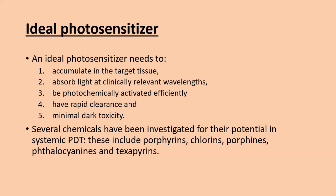What is an ideal photosensitizer? The ideal photosensitizer needs to: (1) accumulate in the target tissue, (2) absorb light at clinically relevant wavelengths, (3) be photochemically activated efficiently, (4) have rapid clearance from the body, and (5) have minimal dark toxicity. Several chemicals have been investigated including porphyrins, chlorins, porfines, phthalocyanines, and texaphyrins.